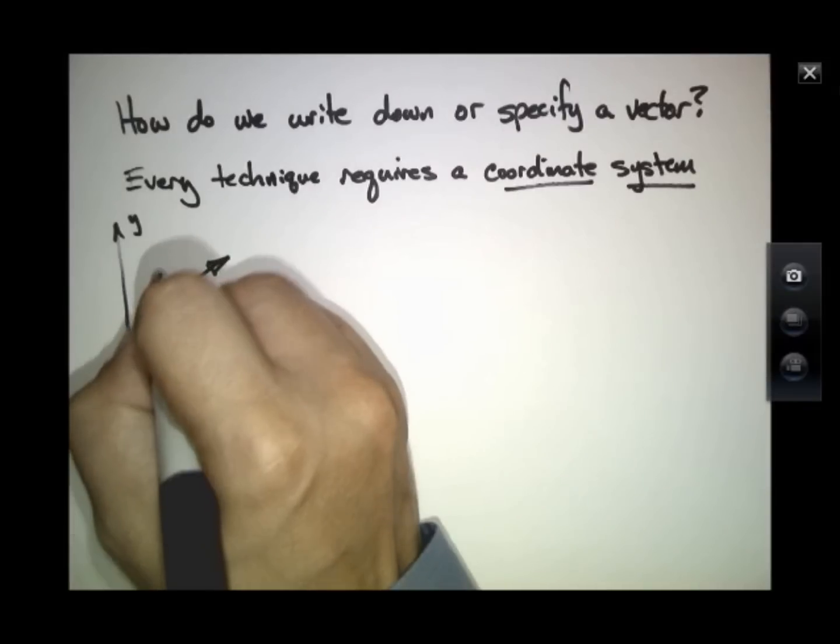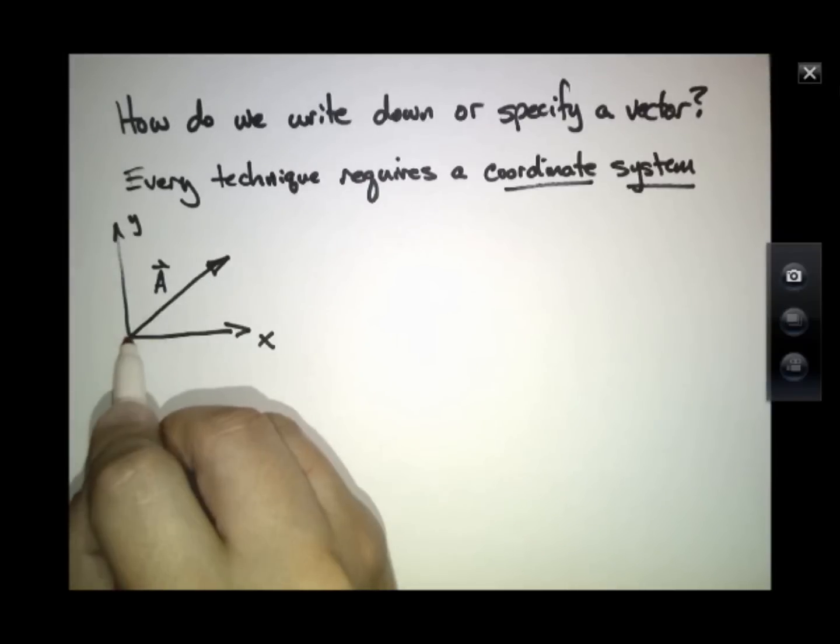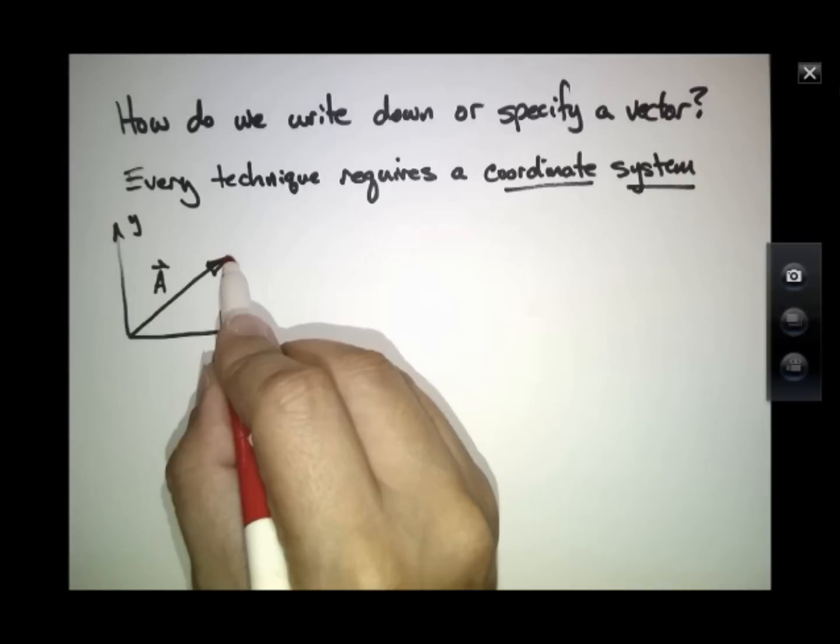And one way of specifying or telling someone about your vector, let's say it's capital A right here, is to tell them about the tip of that vector. In other words, assume that the base of the vector, where you start, is always at the origin, and the tip of the vector is right there.